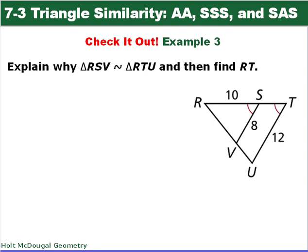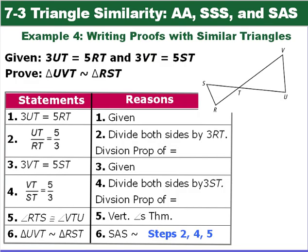Explain why triangle RSV is similar to triangle RTU and find RT. Here's a proof — we're given that 3·UT equals 5·RT and that 3·VT equals 5·ST. We want to prove that triangle UVT is similar to triangle RST.